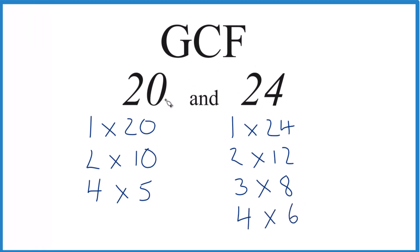We want to look at the common factors. Well, 1 goes into 20 and 24, 2, 4 will go into both 20 and 24, and actually it looks like 4. That's the greatest common factor that goes into both 20 and 24.